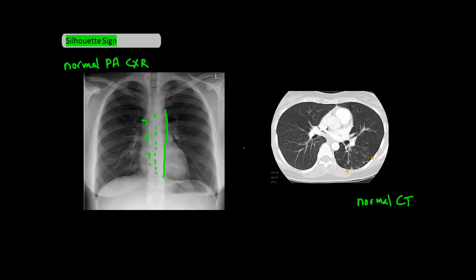Now why is this? This has to do with the fact that one of the borders of the descending aorta is in contact with air — you can see this on the CT of the chest. And because the aorta, which is classified as connective tissue, and air have different densities, you can see a clear border on the X-ray.